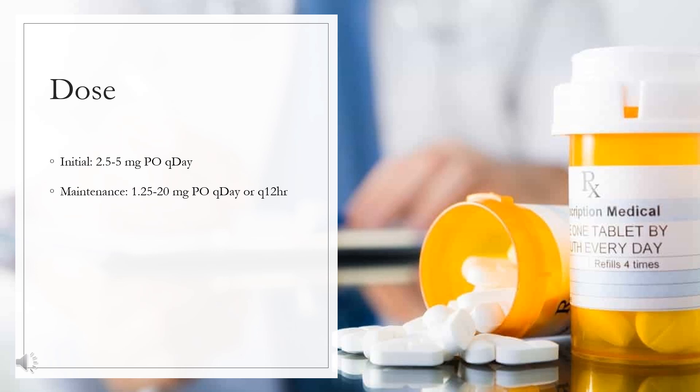Micronized tablets: Initial dose 1.5–3 mg PO once daily. Maintenance dose 0.75–12 mg PO once daily. Not to exceed 12 mg per day. For patients at risk for hypoglycemia, start at 0.75 mg PO once daily initially.